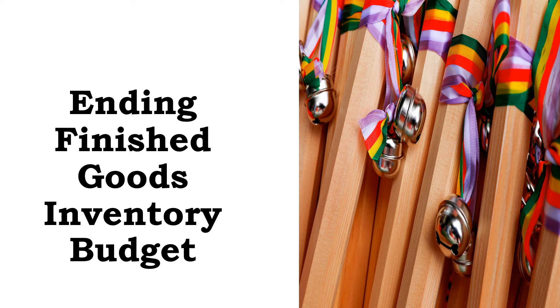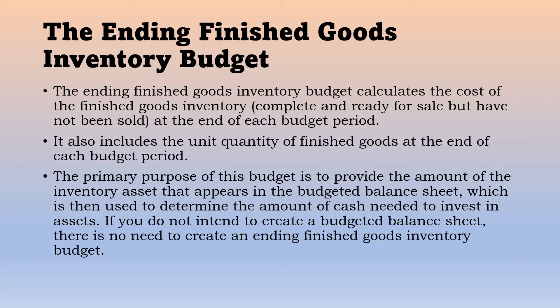What is the Ending Finished Goods Inventory Budget? The Ending Finished Goods Inventory Budget calculates the cost of the finished goods inventory — complete and ready for sale — but have not been sold, at the end of each budget period. It also includes the unit quantity of finished goods at the end of each budget period.